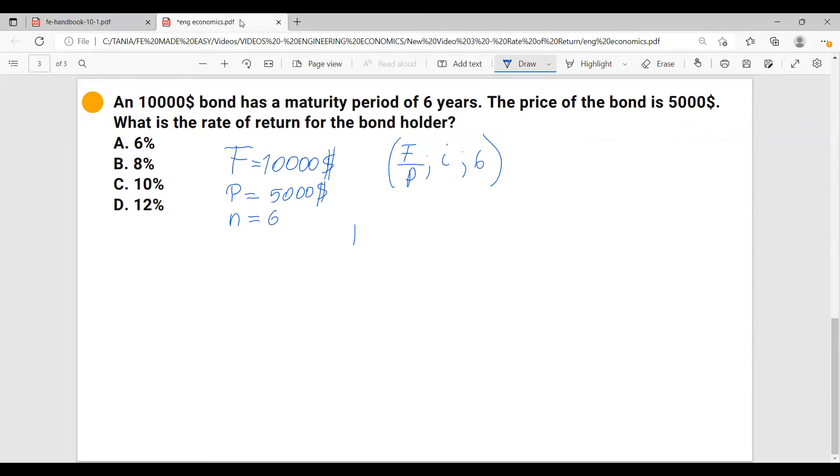So this becomes the future amount equals to the present amount times one plus interest rate power n. And from here, this results in $10,000 equals to $5,000 times one plus i power six.